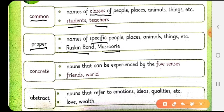Then we have concrete. Now some nouns can be touched and felt by our five senses: that is eyes, ears, nose, tongue and skin. So those nouns are concrete nouns. Let's see what the definition says. Nouns that can be experienced by the five senses. Example is friends, world and many more like this.